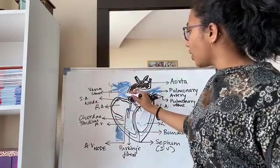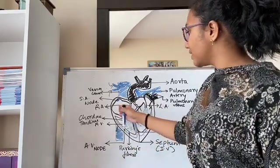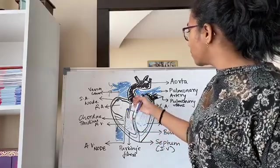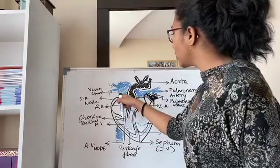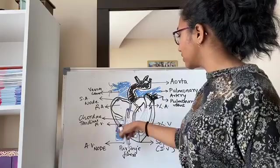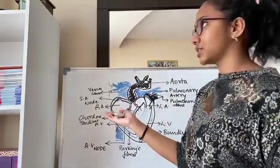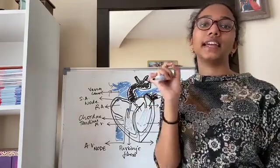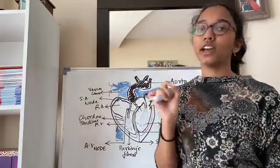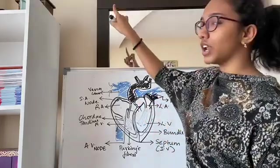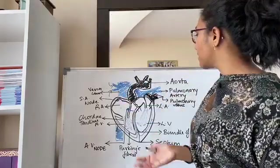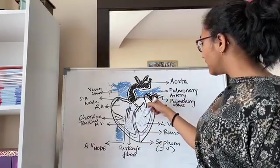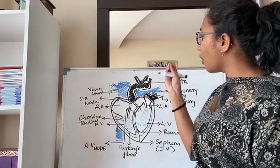Vena cava pumps all its deoxygenated blood to right atrium. Right atrium se it goes to right ventricle, guarded by the tricuspid valve. From there it moves to the pulmonary artery. I've given all the deoxygenated blood in blue color. Pulmonary artery—it is the only artery that carries deoxygenated blood in our body. Pulmonary artery se it goes to lungs. Lungs mein it gets purified. Oxygenated blood comes back from pulmonary veins.